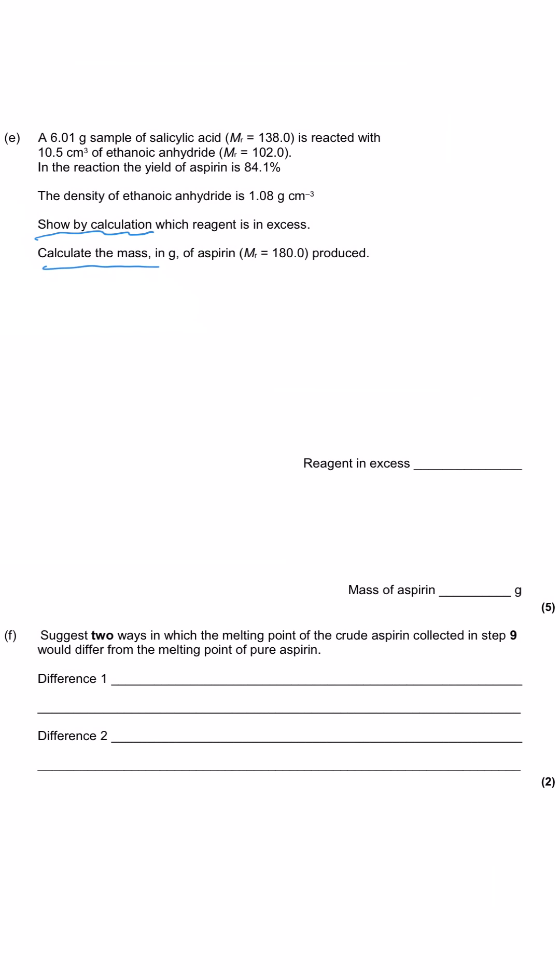Our command is show by calculation which reagent is in excess. And then calculate the mass of aspirin, which has got an MR of 180, that would be produced. So when you're showing which reagent is in excess, we need to work out the moles of both of them. And so as predicted, the moles of salicylic acid should be the first thing that you calculate by doing mass over MR. And so that gives us a moles of salicylic acid of 4.36 times 10 to the minus 2. Then we need to work out the moles of ethanoic anhydride and there's two steps to this. So the second and third mark will come in here. We've been given the density and we've been given the volume.